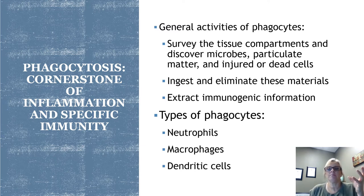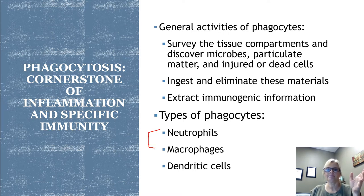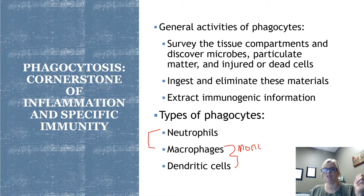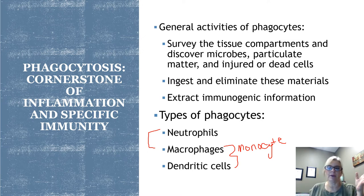We have three types of phagocytes: neutrophils, macrophages, and dendritic cells. Neutrophils and macrophages do phagocytosis the most. Macrophages and dendritic cells both come from monocytes — they differentiate into these two different cells once they change locations. All cells technically have some ability to engulf materials, but phagocytes are professionals — that's what they do for a living.